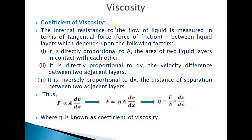The coefficient of viscosity relates to the internal resistance measured as a tangential force of friction between layers. This force of friction depends on the following factors: first, it is directly proportional to the area of the two liquid layers in contact — more area means more friction. Second, it is directly proportional to the velocity difference between two adjacent layers — greater velocity difference means greater retardation by the slower layer.